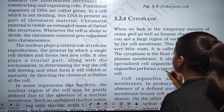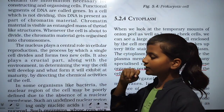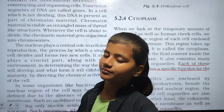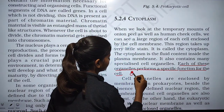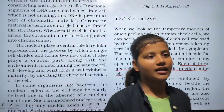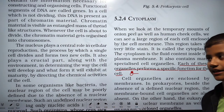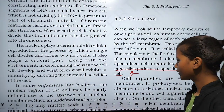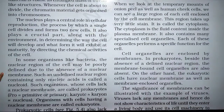Each of these organelles performs a specific function for the cell. For example, ribosomes produce protein and mitochondria produce ATP. They perform different types of functions in the cell.